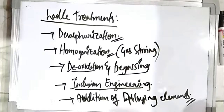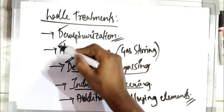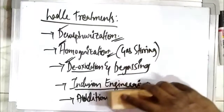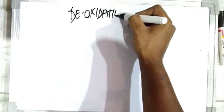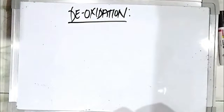Now we will discuss de-oxidation in detail. De-oxidation is nothing but the removal of dissolved oxygen from the steel.